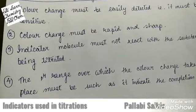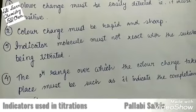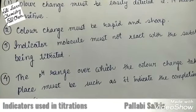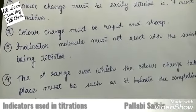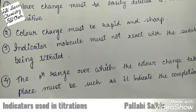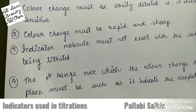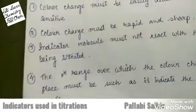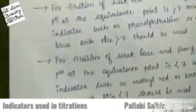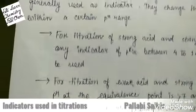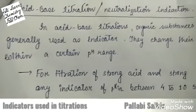During titration, when we are going to use an indicator, the pH range should be such that it will indicate the completion of the reaction. So let's start with the acid-base titration or neutralization indicator.